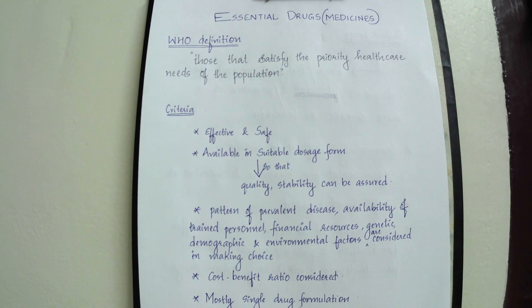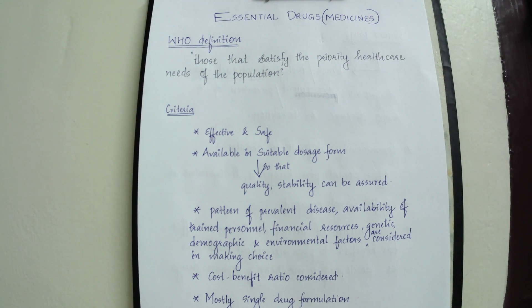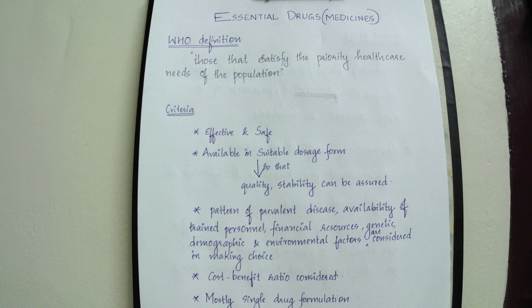The essential drug list can vary from country to country because the health care needs of the population differ from country to country. However, WHO has laid down certain criteria for the selection of essential drugs, and every country follows those criteria in the selection of essential drugs, even though the essential drug list differs from country to country. Let us see what those criteria are.